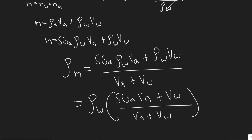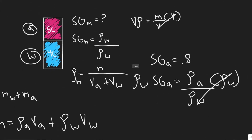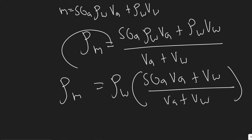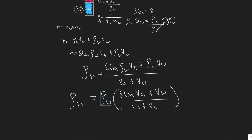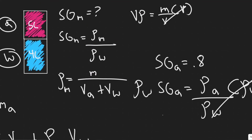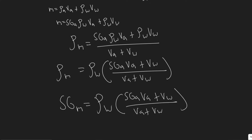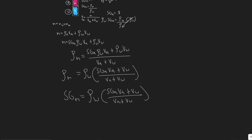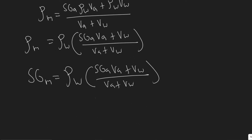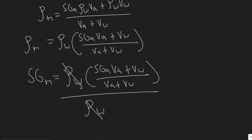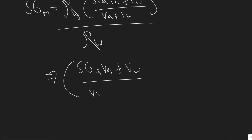Now we have ρ_M expressed with ρ_W factored out. When we plug ρ_M into the specific gravity formula SG_M = ρ_M / ρ_W, the ρ_W terms cancel. So SG_M simply equals (SG_A × V_A + V_W) / (V_A + V_W).